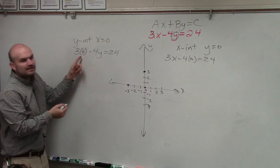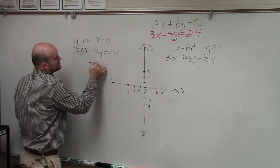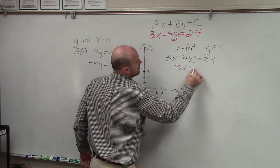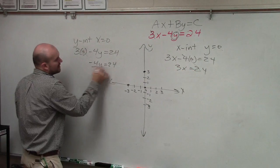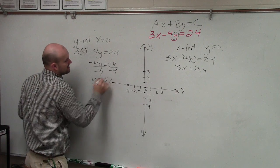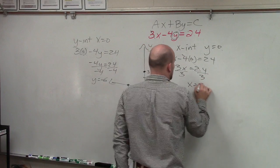Now any number multiplied by 0 is going to be 0, and now you can solve. So I divide by negative 4, y equals negative 6. Divide by 3, x equals 8.